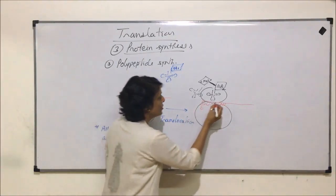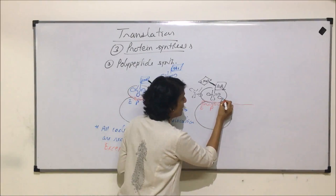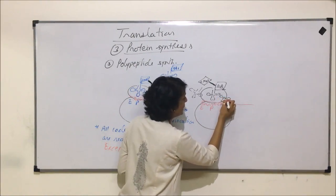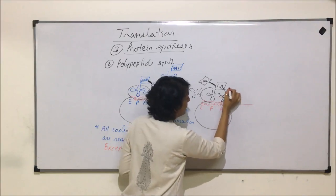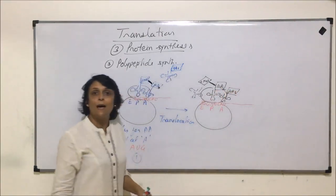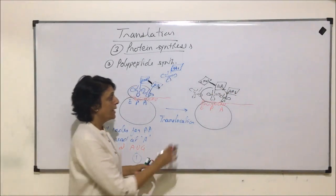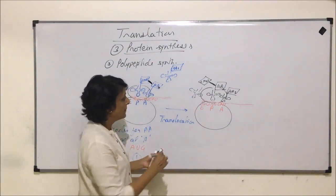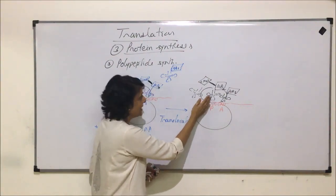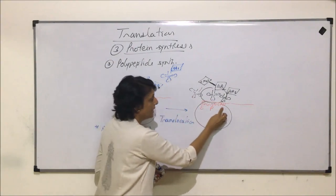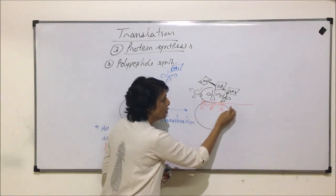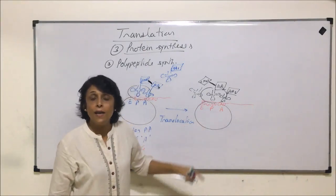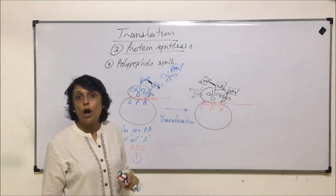tRNA can read it. So another tRNA with another amino acid, here is going to be amino acid 3, will come at this position. After this, it is going to move further. And what will happen after that? This tRNA will come at E site and will escape from here. This code, that is CAU, will come here. And a new code is going to come at position A. This is going to continue till there is a stop codon.